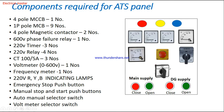If we put the auto mode, the ATS panel will sense source 1 — the electricity supply. Whenever the electricity supply is not available, it automatically changes the load to the diesel generator supply. Similarly, when the electricity supply comes back, it changes the load back to the electricity supply and switches off the DG.